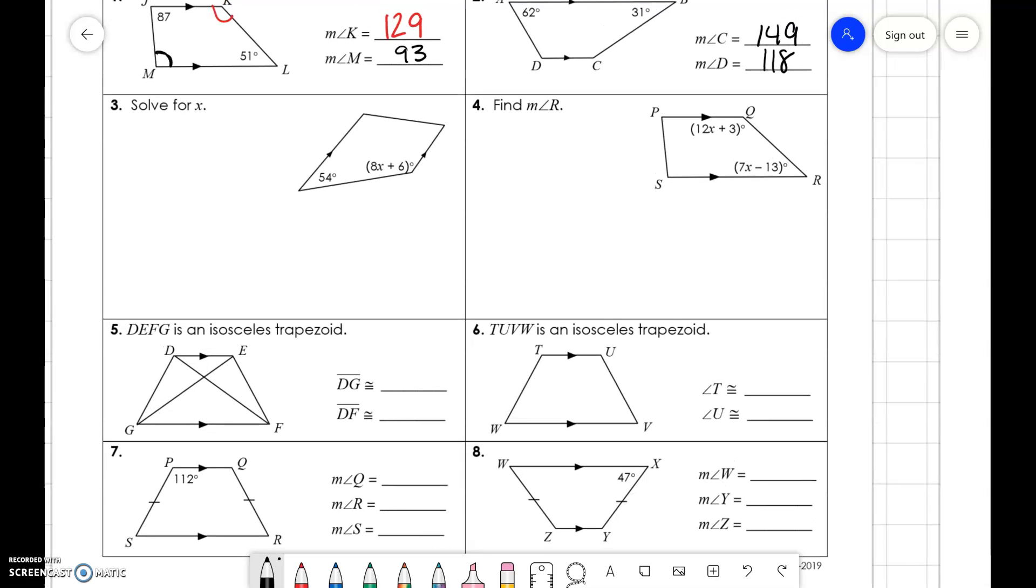So, doing algebra with these problems, if you look, here are the parallel lines. These two are supplementary, so 54 plus 8x plus 6 is equal to 180. When we solve, we get 8x is equal to 120, x is equal to 15.